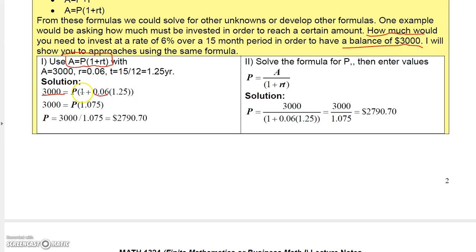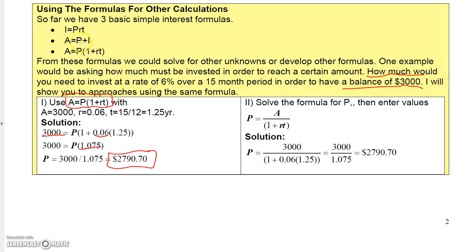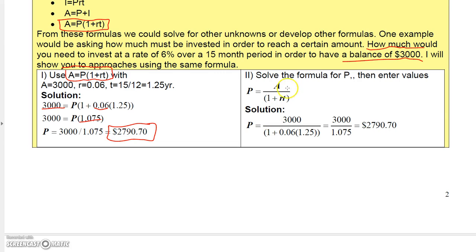And then you could actually simplify all of this. If you multiply this together and add 1, you get 1.075. And then if you divide 1.075 into 3,000, you get 2790.70. Another way to do that is simply take this formula here and solve it for a formula for P. All you have to do is divide both sides by 1 plus RT. So if you do that, you get this formula for P.